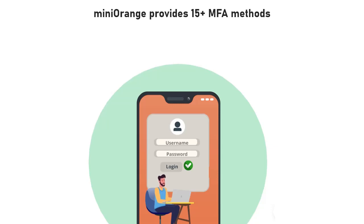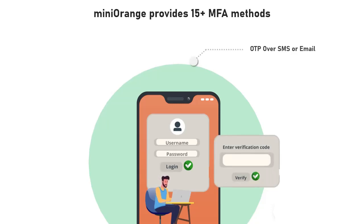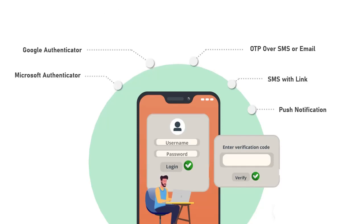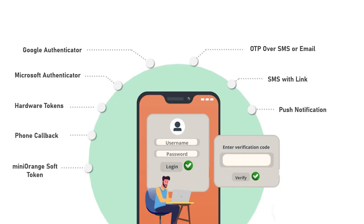Mini Orange provides 15 plus MFA methods like OTP over SMS or email, SMS with link, push notifications, Google Authenticator, Microsoft Authenticator, hardware tokens, phone callback, Mini Orange soft token, and many more.